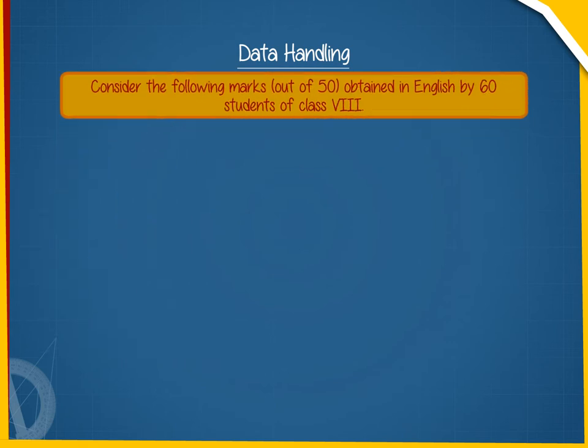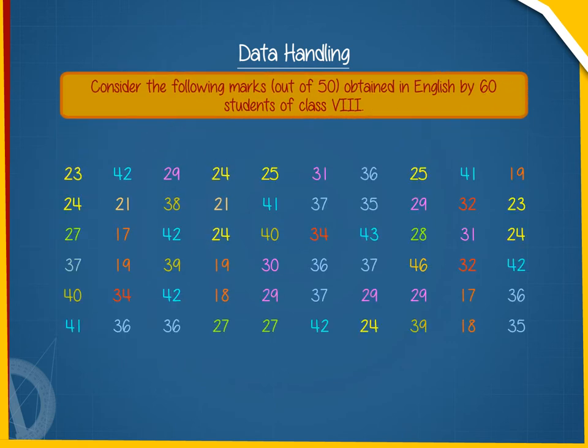Consider the following marks out of 50 obtained in English by 60 students of class 8. If we make a frequency distribution table for each observation, then the frequency table would be too long.